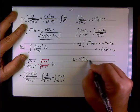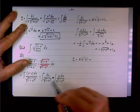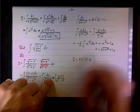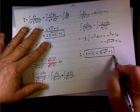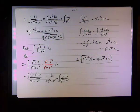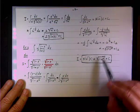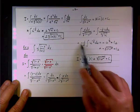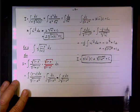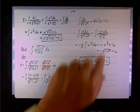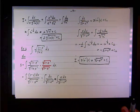Putting it together: the first part gives inverse sine, and the second part — note there's a minus from the split and a minus from the substitution — the double negative gives a plus. The one-half from the substitution cancels with the factor of two from the antiderivative of u to the negative one-half.